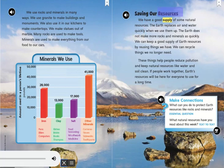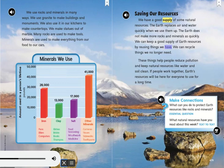Saving our resources: We have a good supply of some natural resources. The earth replaces air and water quickly when we use them up, but it does not make more rocks and minerals as quickly. We can keep a good supply of earth resources by reusing things we have. We can recycle things we no longer need. These things help people reduce pollution and keep natural resources like water and soil clean. If people work together, earth's resources will be here for everyone to use for a long time.